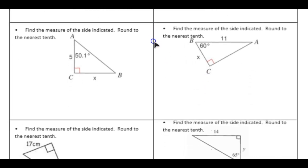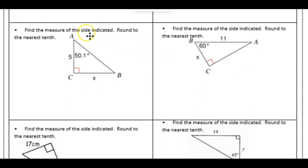Alright, next up. Find the measure of the side indicated. Here we have an x to indicate it. From the 50.1 perspective, we have opposite and adjacent. That's tangent.